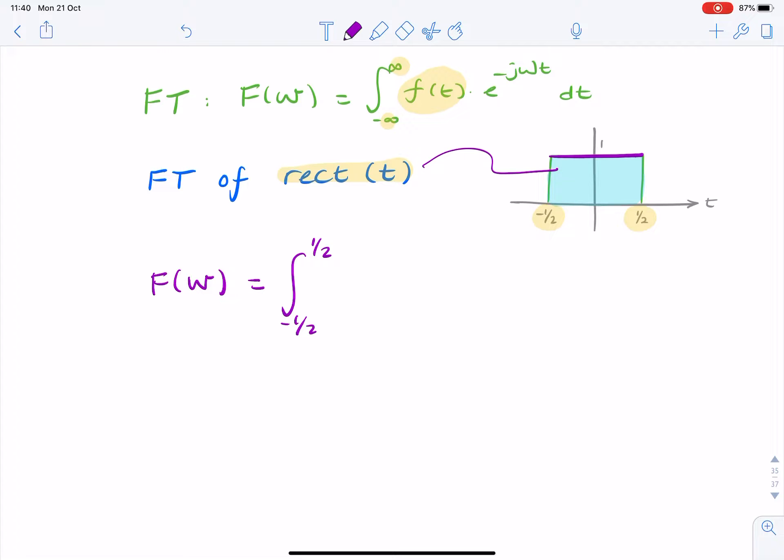So I'm replacing f of t with one, and then e to the minus j omega t dt.